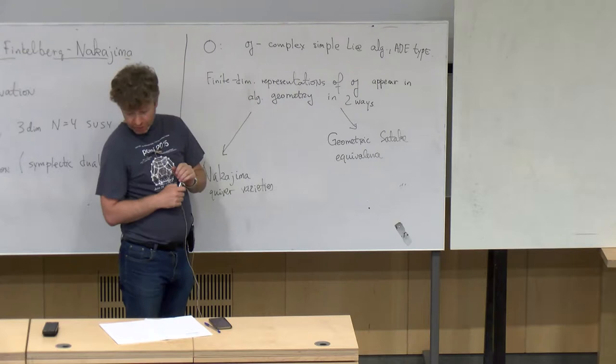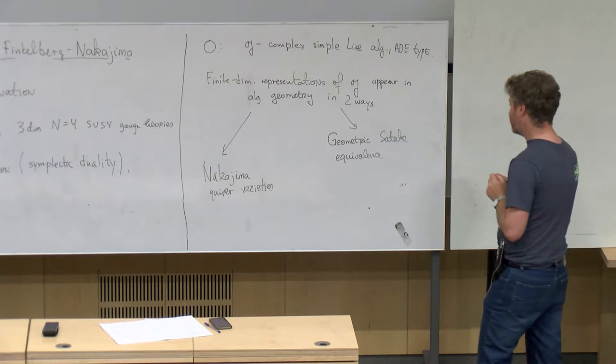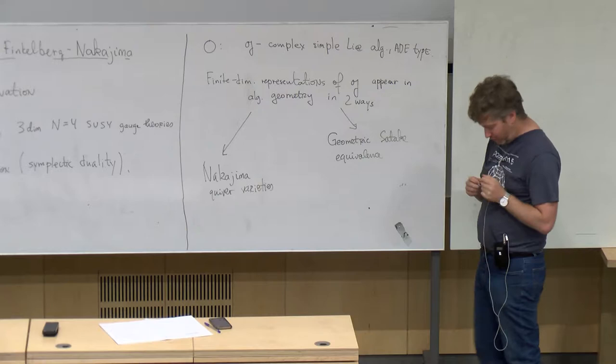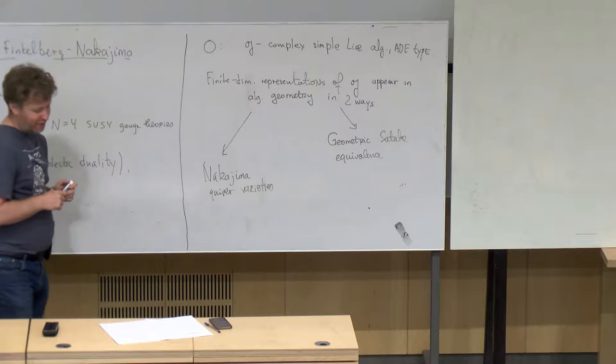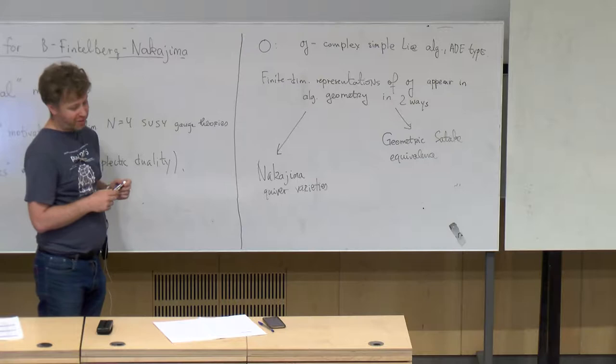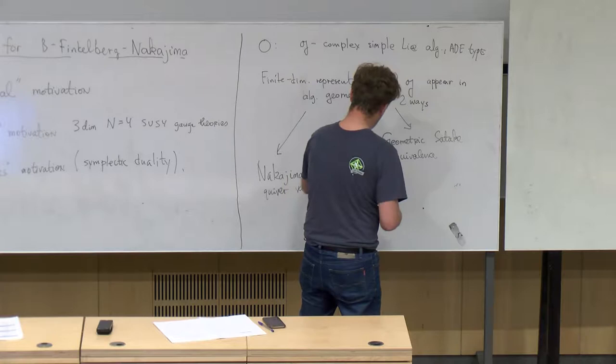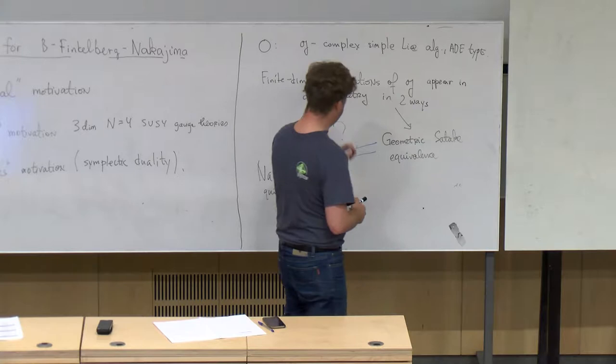One thing I learned from Joseph is that in mathematics nothing is accidental. So if you have two nice constructions of the same thing, from a certain point of view it should be the same construction. The question is: what is the theory which says that these two things are kind of the same?